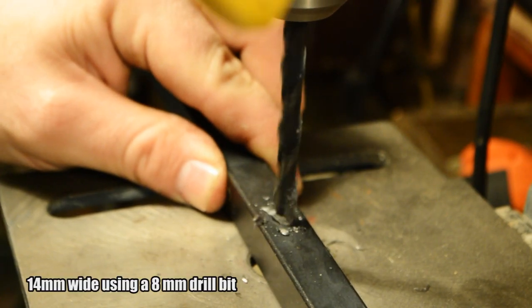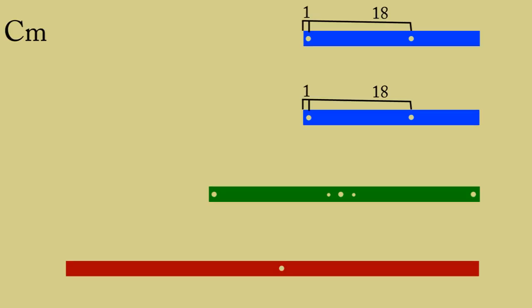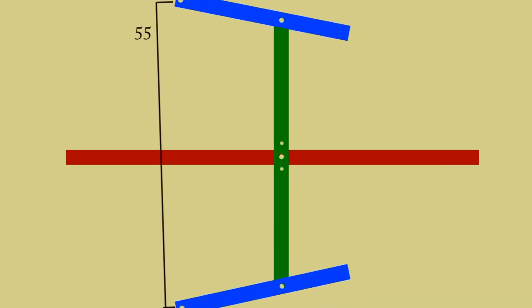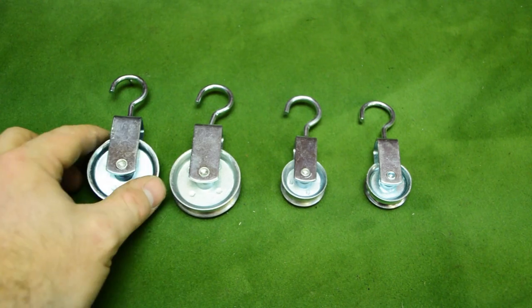These are the hole distances in each component. Let's see the assembling sequence of the bow: the green part and the blue part. I remind you that 55 centimeters is the distance between the blue parts.